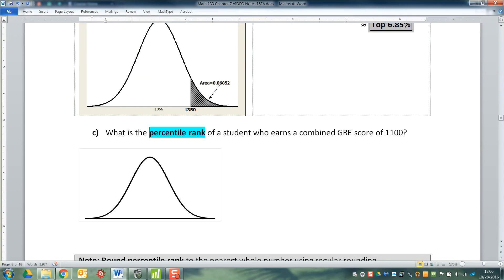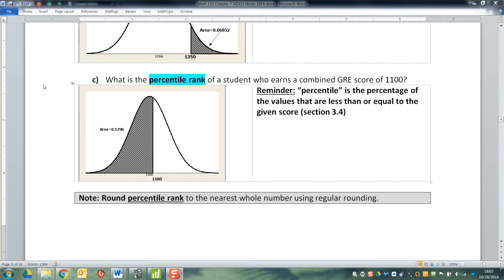Percentile, of course, is the percentage that's below you or equal to your score. Percentage below you or equal to your value. We learned that in section 3.4.